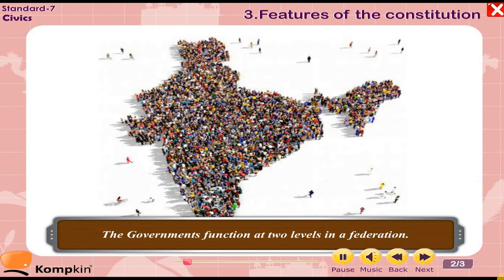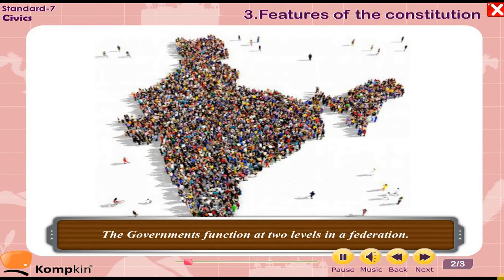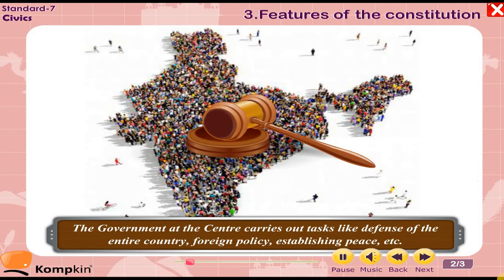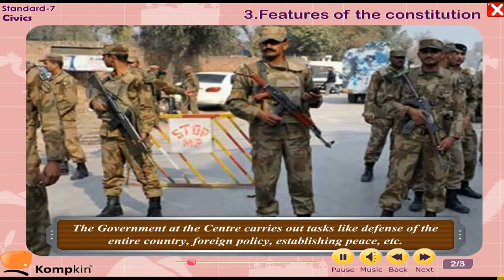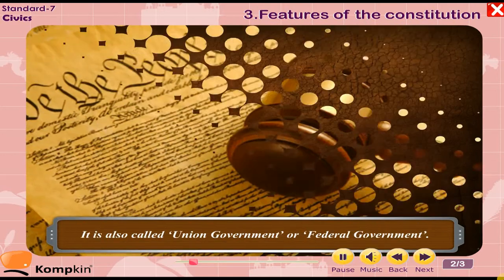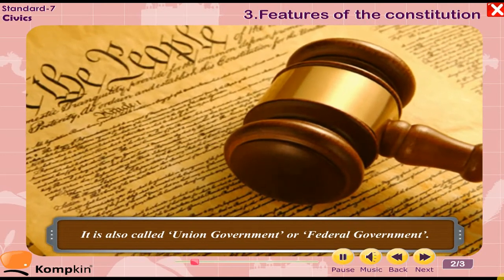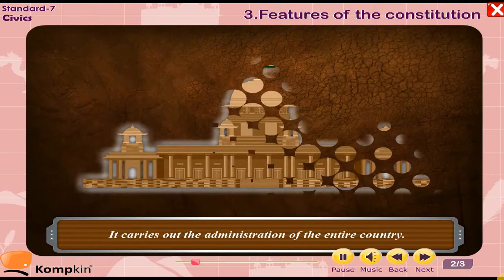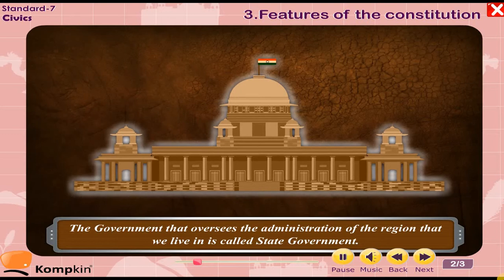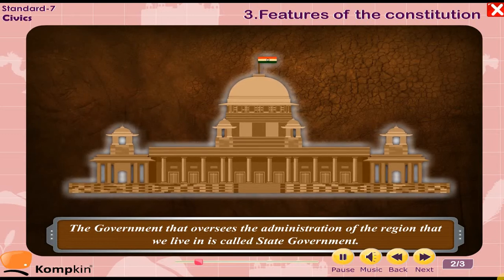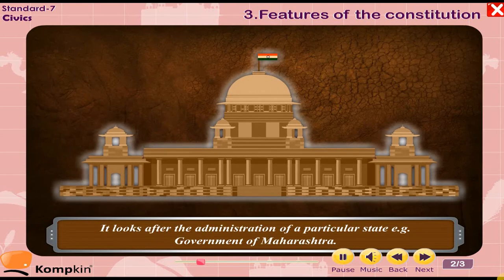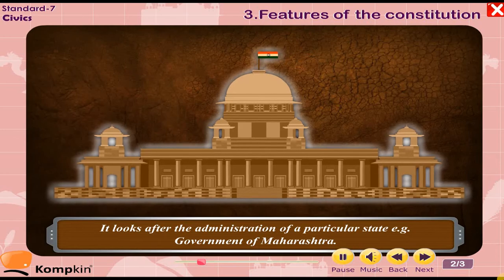The governments function at two levels in a federation. The government at the center carries out tasks like defense of the entire country, foreign policy, establishing peace, etc. It is also called union government or federal government, and it carries out the administration of the entire country. The government that oversees the administration of the region we live in is called state government, and it looks after the administration of a particular state.